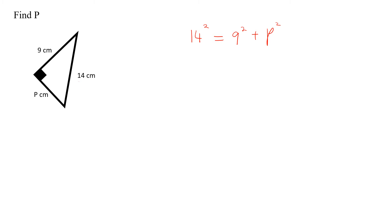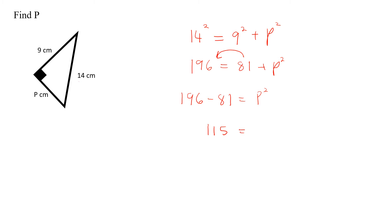Let's solve this. 14 squared is 196, and 9 squared is 81. So we have 196 equals 81 plus p squared. Transposing the 81, we get 196 minus 81 equals p squared. That gives us 115 equals p squared. Finding the square root of both sides, the square root of 115 is approximately 10.7.